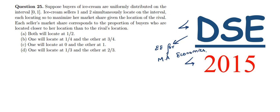In our last videos we have solved questions up to 24, so now we are starting with question number 25. Question 25 says: suppose buyers of ice cream are uniformly distributed on the interval [0, 1].